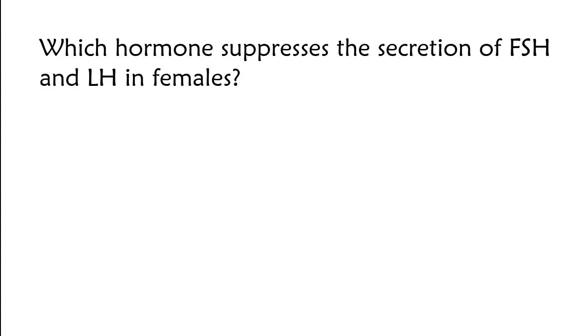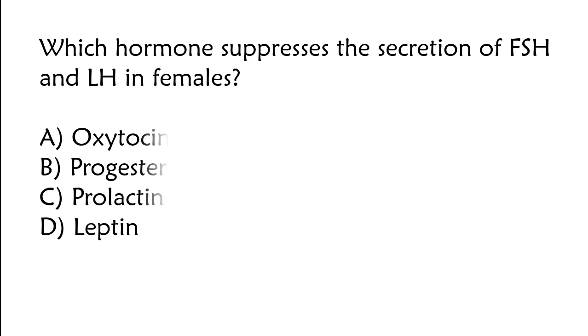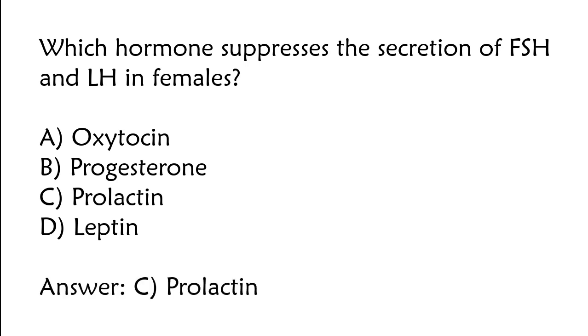Which hormone suppresses the secretion of FSH and LH in females? Oxytocin, progesterone, prolactin, leptin. The correct answer is Option C: Prolactin.